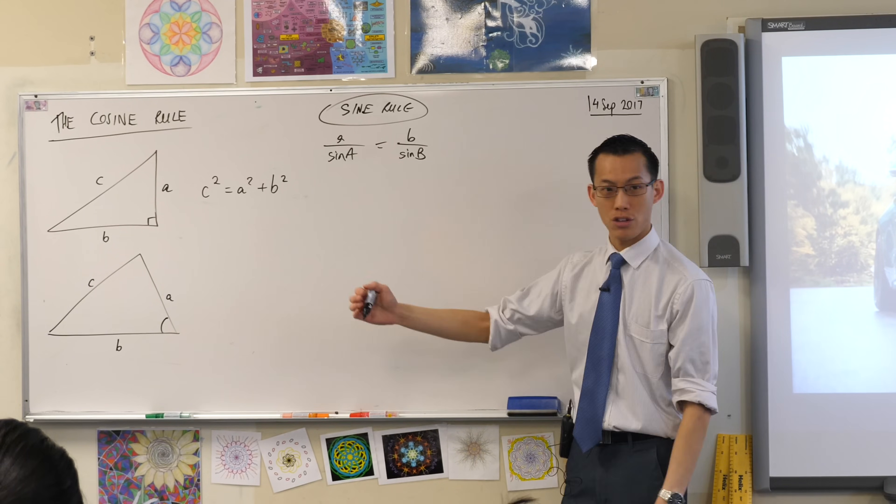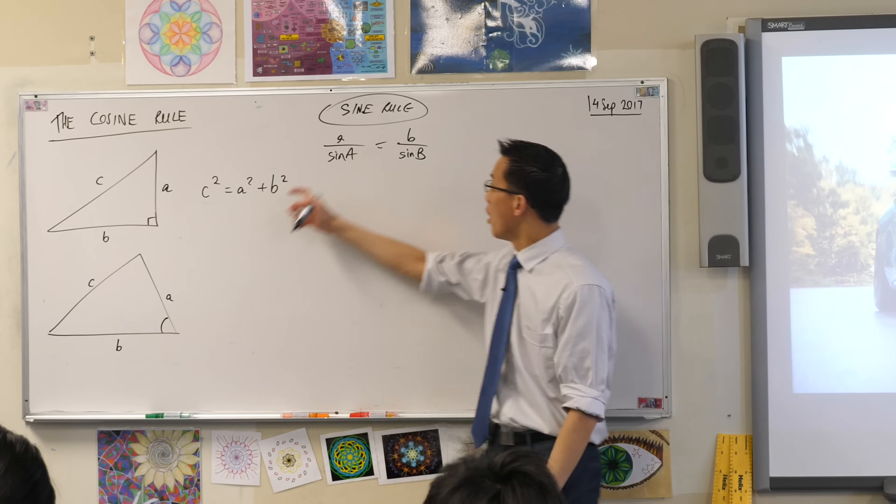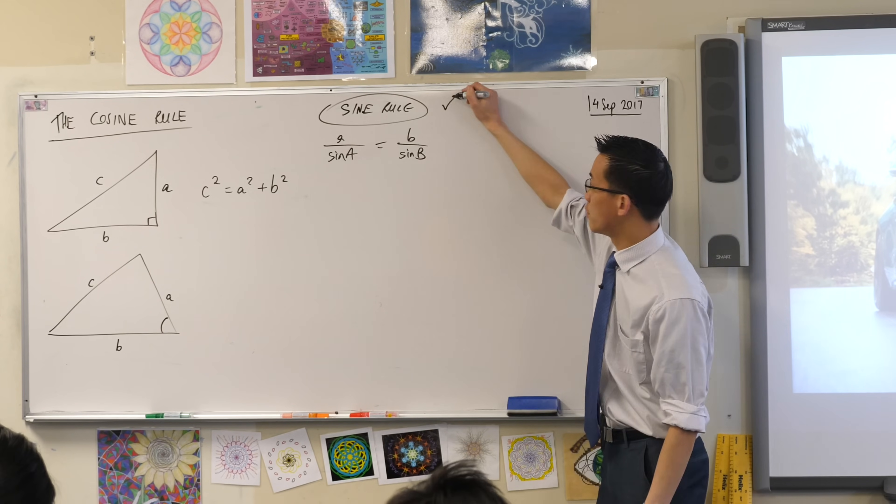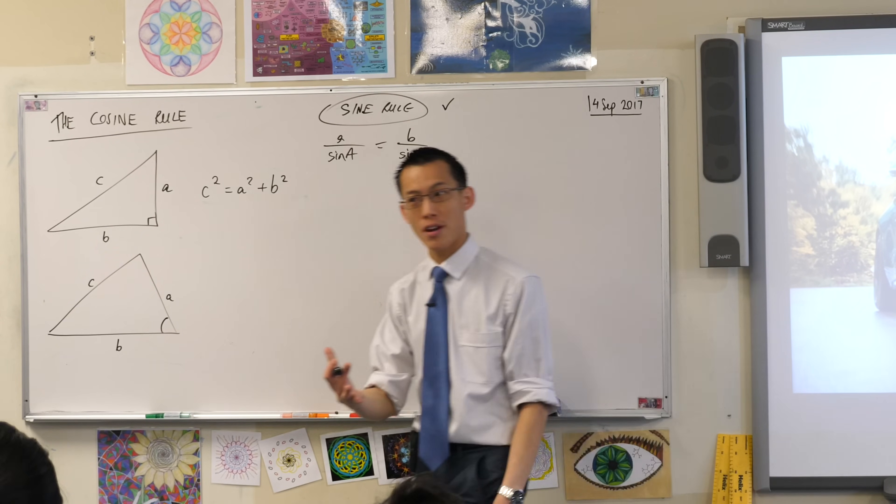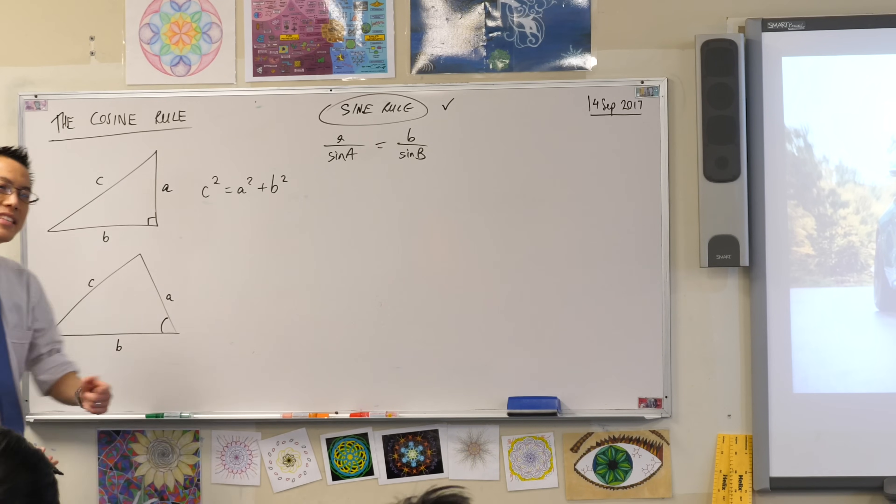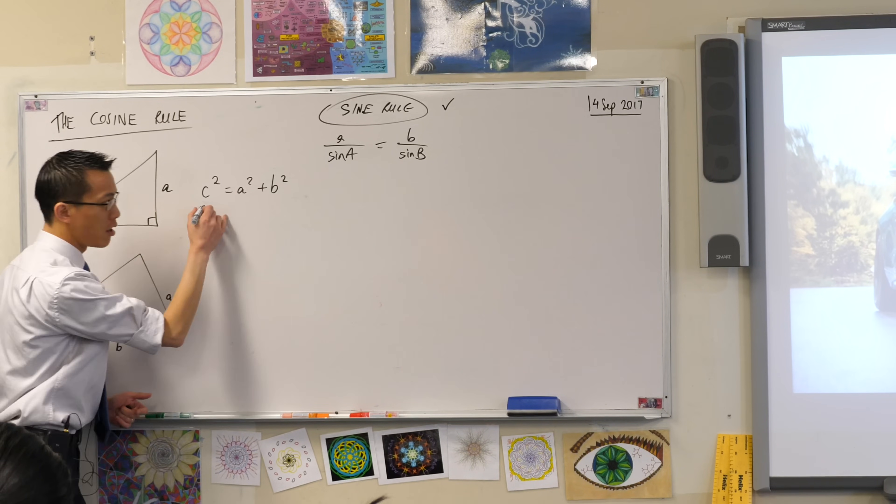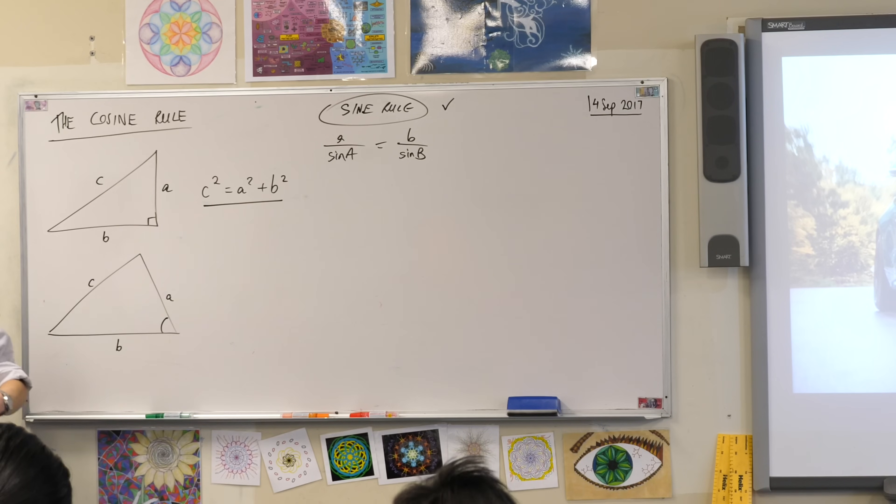So, what happens when you don't have a right-angled triangle? Well, we already know this guy, we already know the sine rule. We can use that if we don't have a right-angle. But, there's actually a version of Pythagoras' theorem which looks a lot like Pythagoras' theorem, but it's just adjusted to work for non-right-angled triangles.